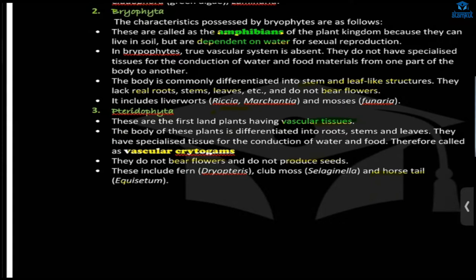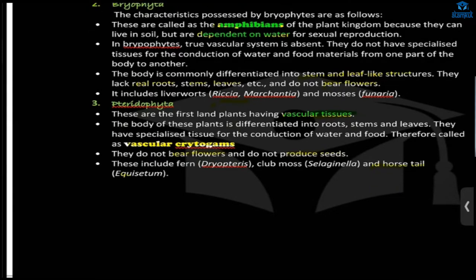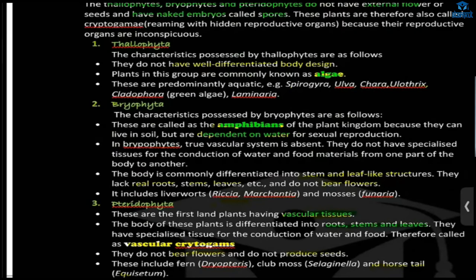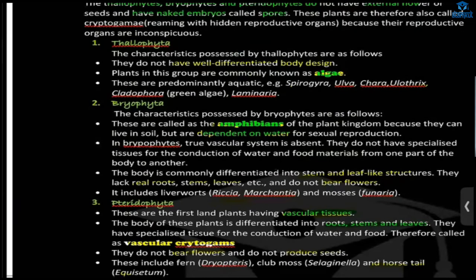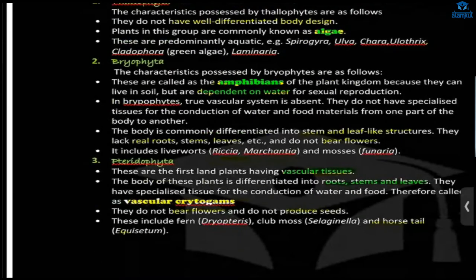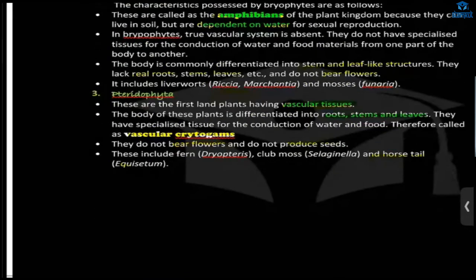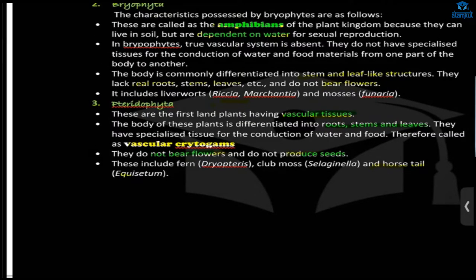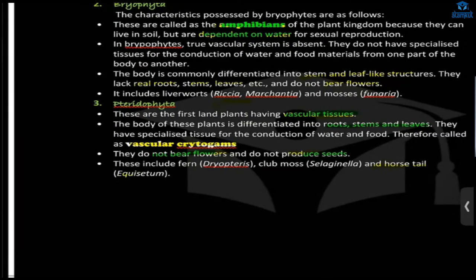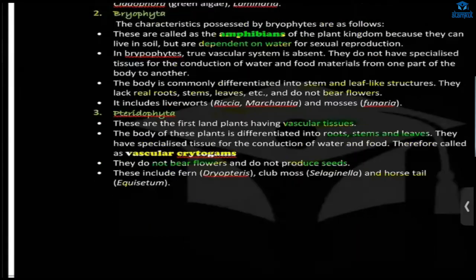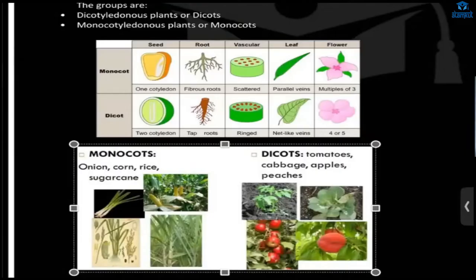In Pteridophyta, the plant body is differentiated into root, stem, and leaves, whereas in the previous groups we cannot differentiate between leaf, stem, and roots. They do not bear flowers and they do not bear seeds. You can learn two examples for each group.